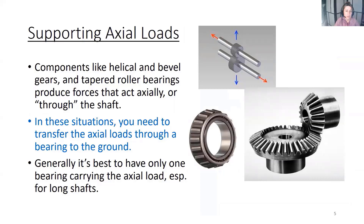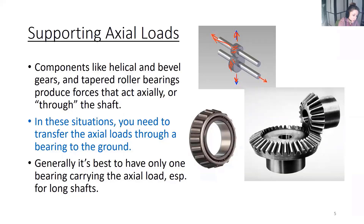In these situations, you need to transfer the axial or thrust load through a bearing to the ground. There is a radial load acting radially through the gear, and because of the helix angle there is also a force produced through the shaft. In general, it's best to have only one bearing handling the axial load, especially for long shafts.